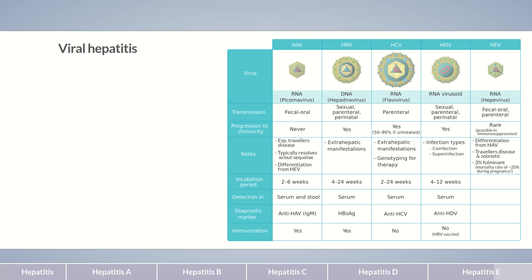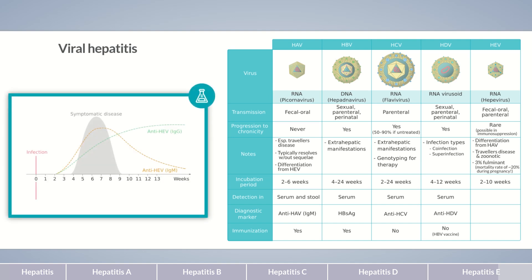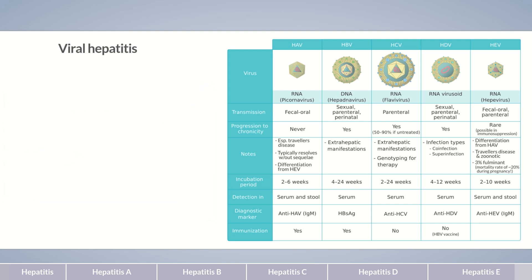The incubation period of hepatitis E is similar to hepatitis A, comparatively short at 2 to 10 weeks. Serology is the method of choice to diagnose hepatitis E. IgM antibodies can usually be detected 1 to 4 weeks after symptoms appear, while the sole presence of anti-HEV IgG indicates past infection. Transaminase levels are also increased in acute hepatitis E, and HEV can be detected by PCR in serum or stool samples. Currently, there is no vaccine available for hepatitis E in the US.